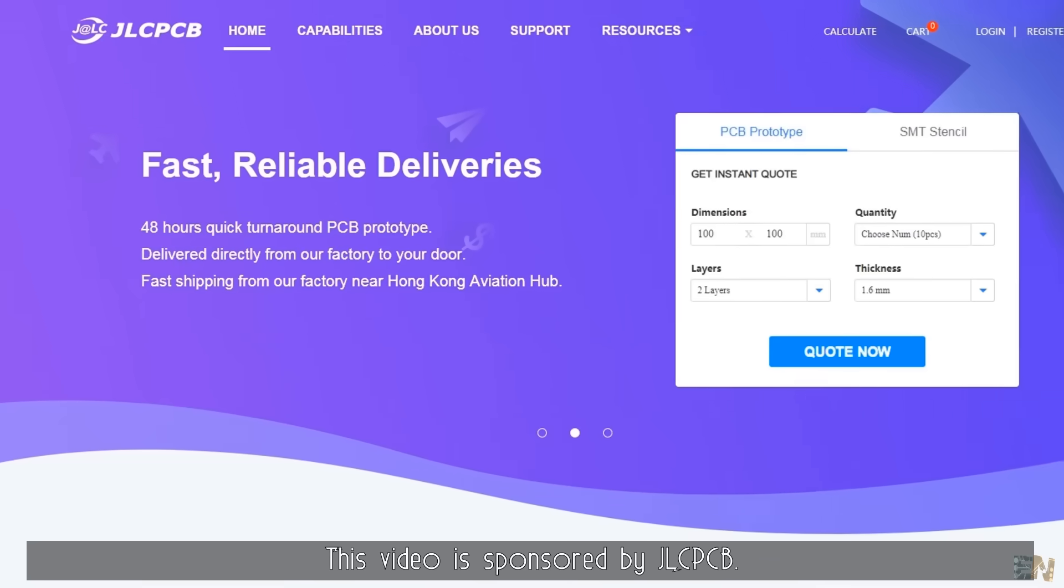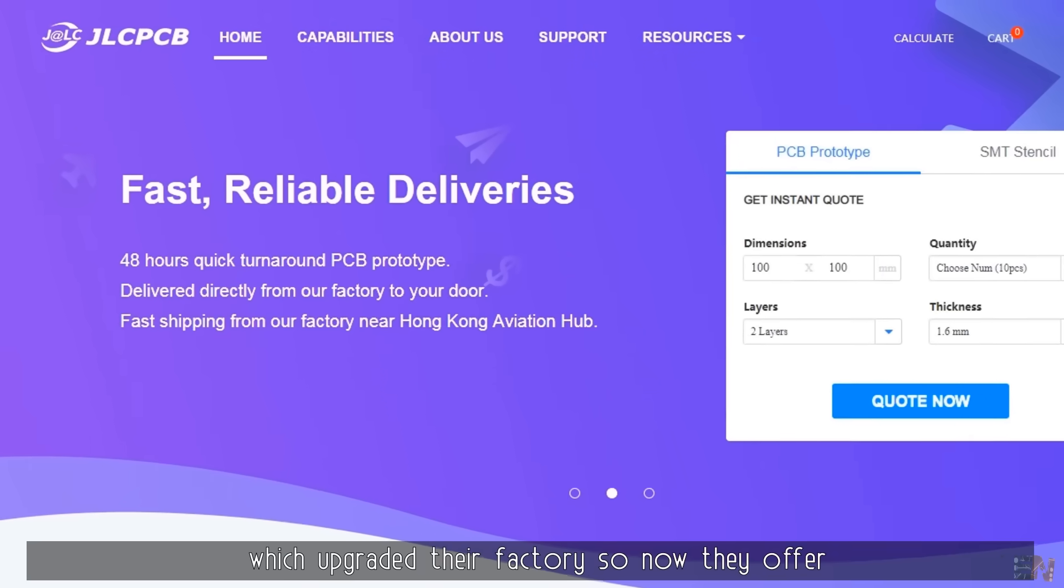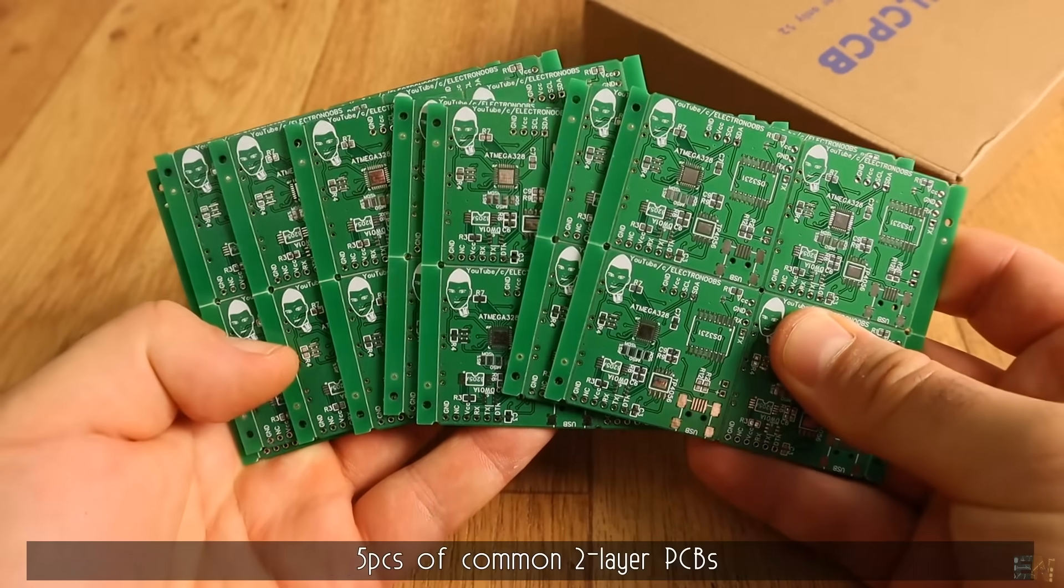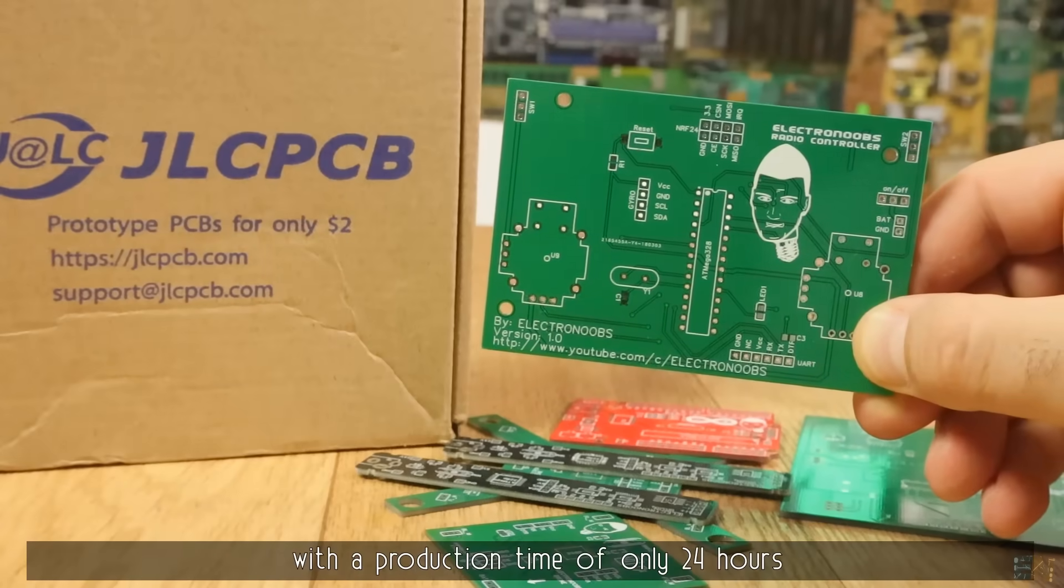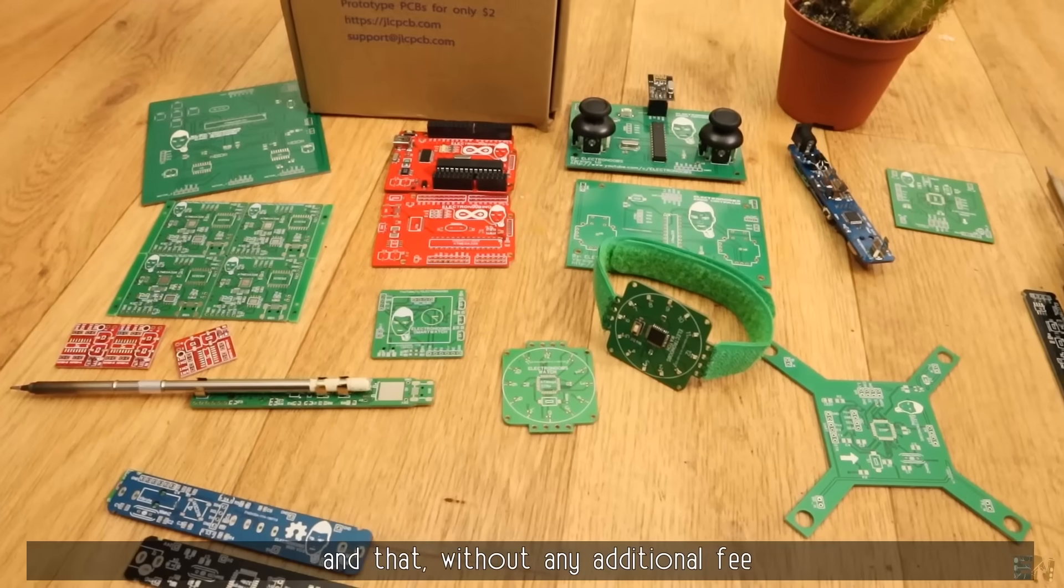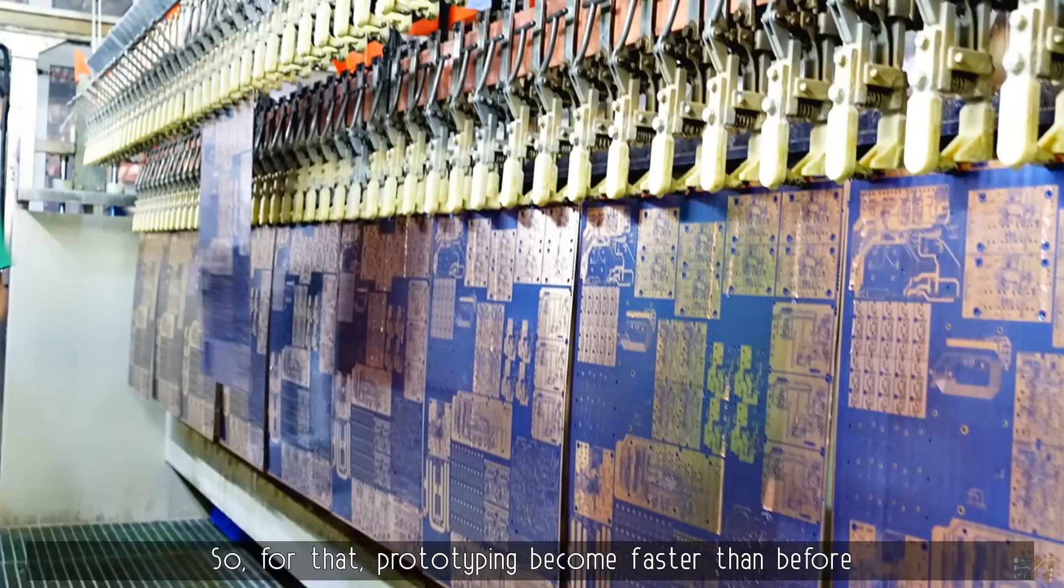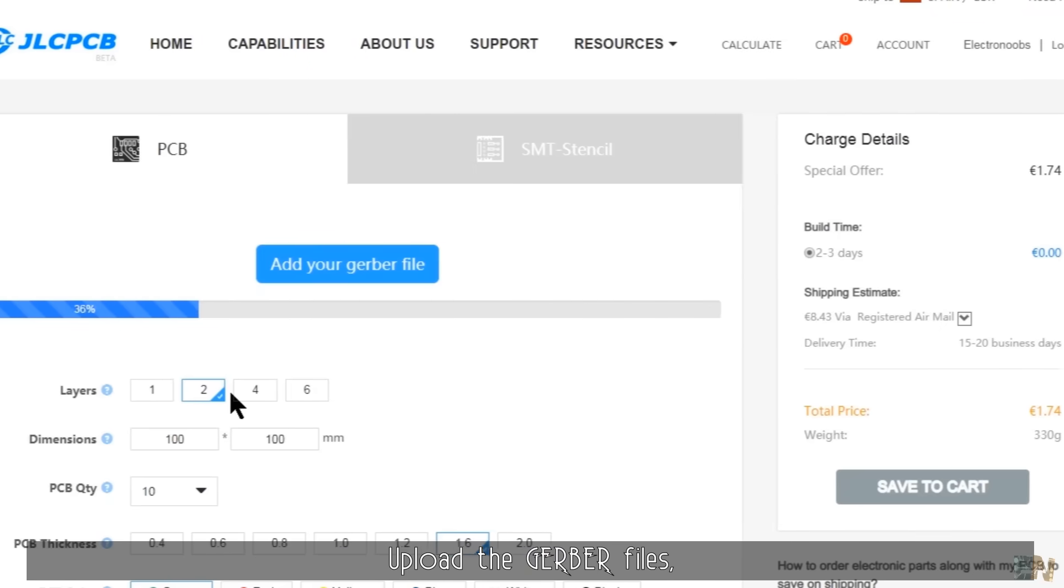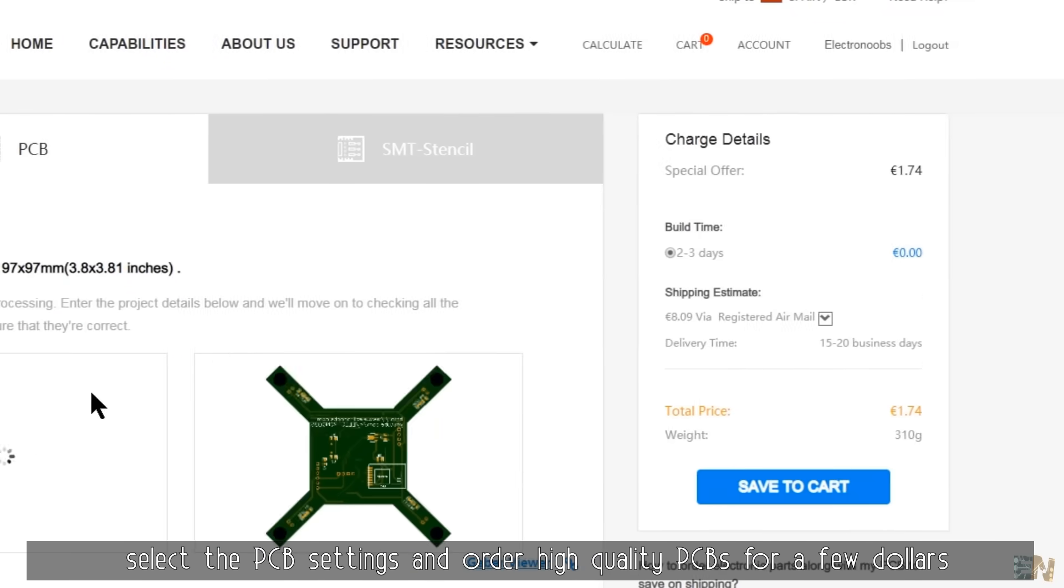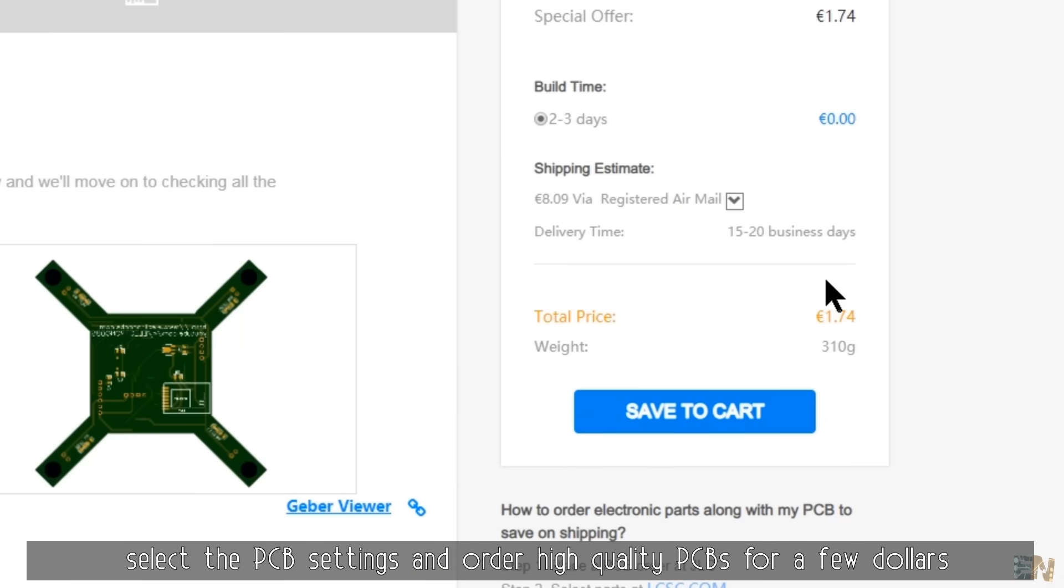This video is sponsored by JLCPCB, which upgraded their factory so now they can offer 5 pieces of common 2 layer PCBs with a production time of only 24 hours and that without any additional fees. So prototyping becomes faster than before but for the same low price. Upload the Gerber file, select the PCB settings and order high quality PCBs for a few dollars.